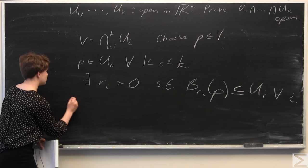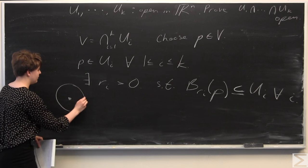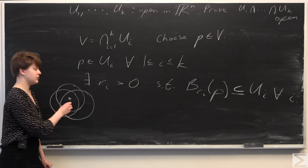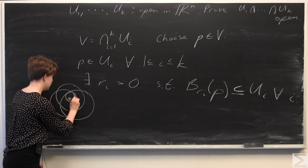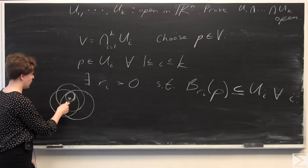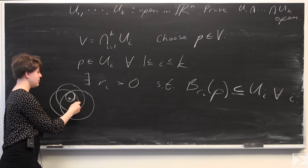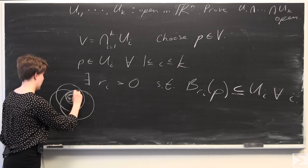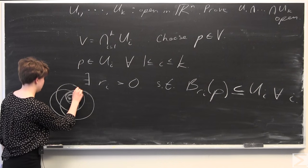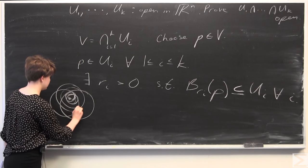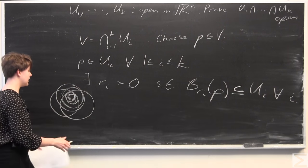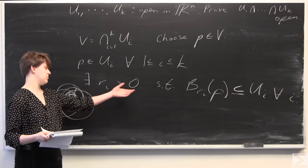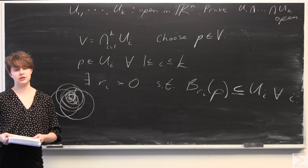So we have an open set — you can imagine p is some point and we have the intersection of some open sets. We're looking at balls of different radii that are completely contained within these sets. These are all the different balls, just pointing out the different radii, that are completely contained within each of the individual given open sets.